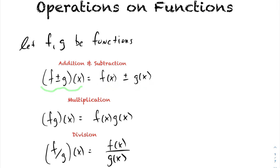People will write either the plus or the minus, put f plus g or f minus g in brackets, and then it's acting on some variable x. When someone writes that, it is equivalent to writing f(x) plus g(x), or if it's subtraction, f(x) minus g(x). If you have a function f and a function g and you add or subtract them, the result is still a function — so by doing these operations on functions you are creating new functions.